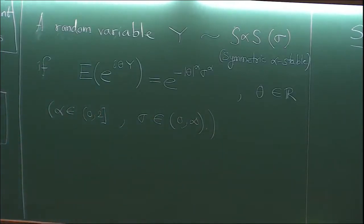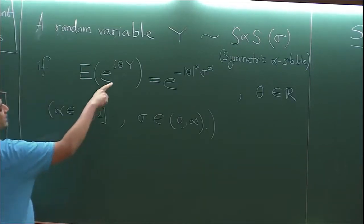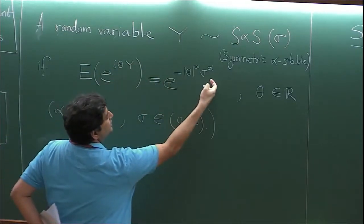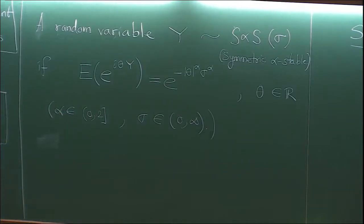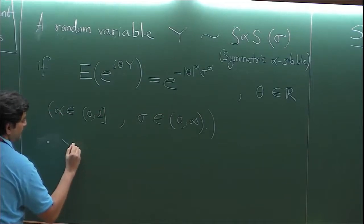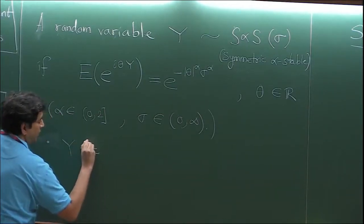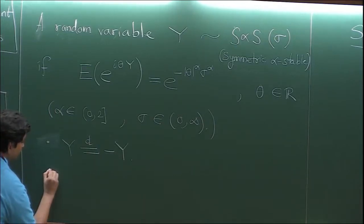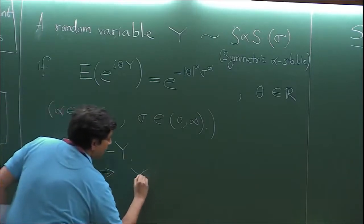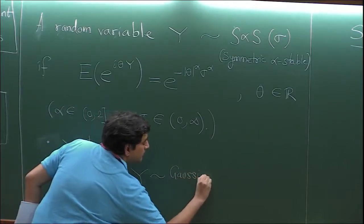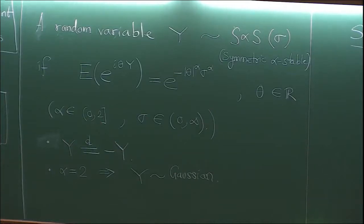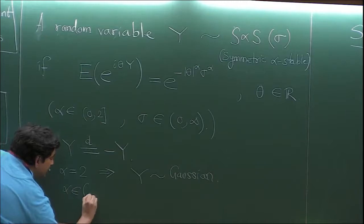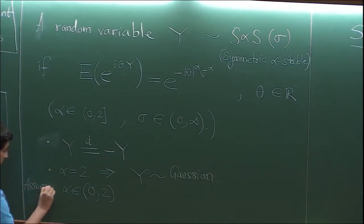These are the parameters of this distribution. There is one value of alpha for which we've all seen this distribution. I'm taking the expectation of a complex random variable and getting a real number. Using that, one can show that the distribution of Y is symmetric around 0 — the distribution of Y and minus Y have the same law. The special case alpha equal to 2 would imply Y follows a normal distribution. However, for this talk, we are going to assume it is non-Gaussian: alpha is strictly between 0 and 2.